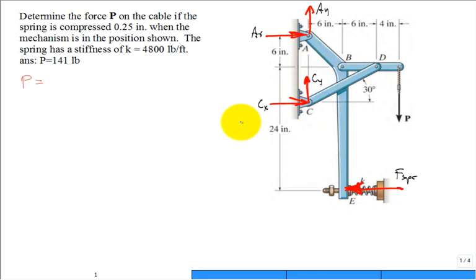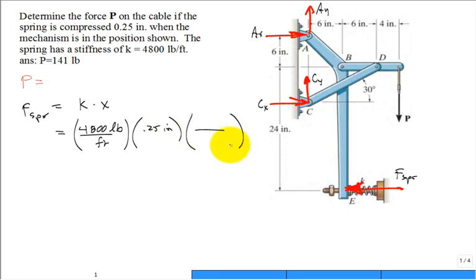I can actually calculate the magnitude of the force in the spring. That was Hooke's Law, wasn't it? K times either the stretch or the compression. It's going to be the stiffness, 4,800 pounds per foot, and then 0.25 inches, and then we need a conversion factor. A foot is 12 inches. This is 100 pounds.